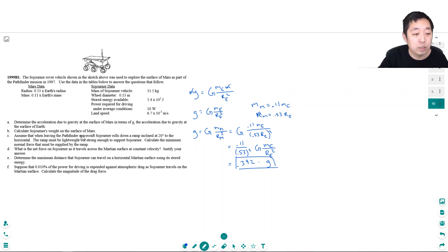Part B: Calculate the Sojourner's weight on the surface of Mars. Well, it's mg, it's the mass times g. So it would be 11.5 kilograms times 0.392 times 9.8 meters per second squared, right? Because I don't use the g of Earth, I use the g of Mars, which we decided was this. So his weight would be 44.1 newtons.